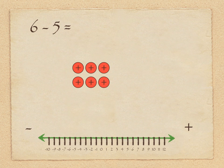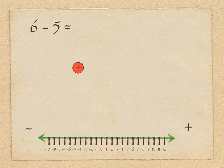So first of all, we have 6 minus 5. We're showing with the counters 6 positive chips, and we're simply going to take away 5 of them. We blast 5 of them out and we're left with 1 — pretty straightforward. With the caveman, because it's a subtraction question, he's looking towards the lower numbers. He's going to subtract a positive, so he walks forward in that direction 5 steps to the number 1.